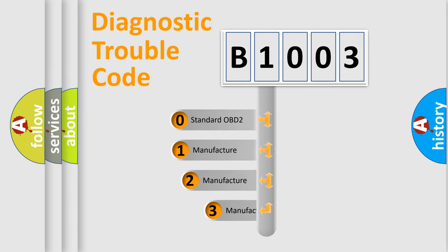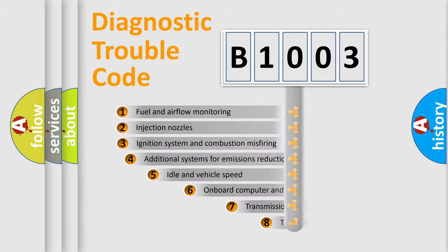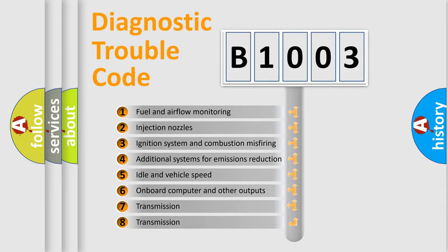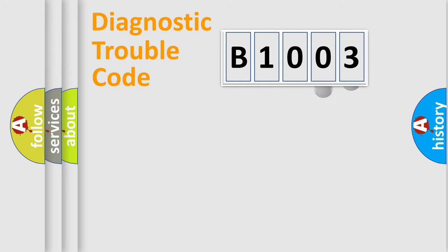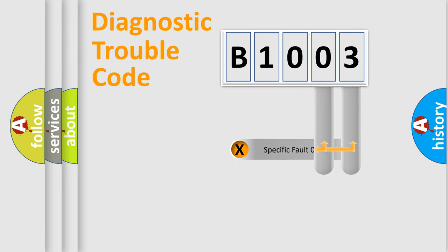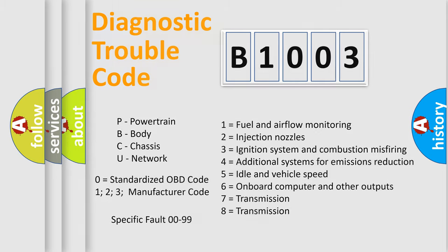If the second character is expressed as zero, it is a standardized error. In the case of numbers 1, 2, or 3, it is a more specific expression of a car-specific error. The third character specifies a subset of errors. This division is valid only for the standardized DTC code, and only the last two characters define the specific fault of the group. Such a division is valid only if the second character code is expressed by the number zero.